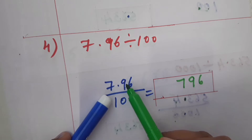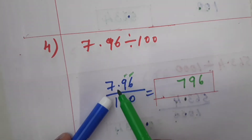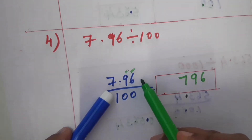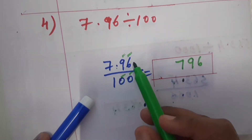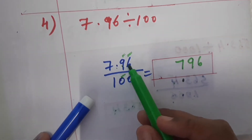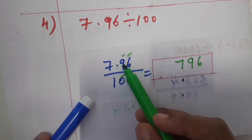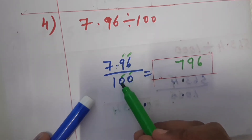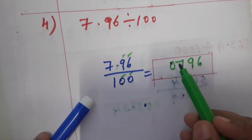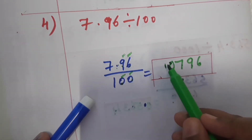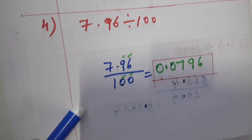When the numerator is a decimal number, we also count the digits after the decimal point. After the decimal point there are two digits. The denominator has two zeros. So total count is two plus two equals four. Place the decimal point after four digits from the right and add a leading zero. The answer is 0.0796.